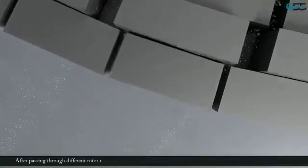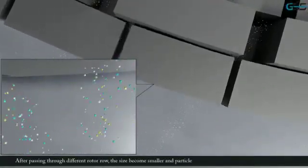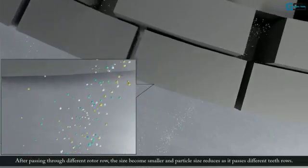After passing through different rotor rows, the size becomes smaller and particle size reduces as it passes different teeth rows.